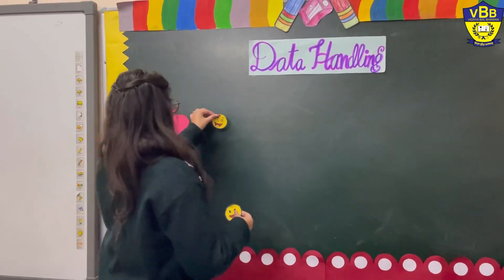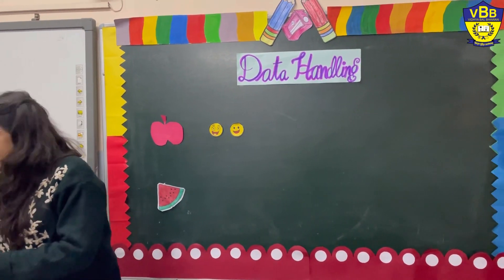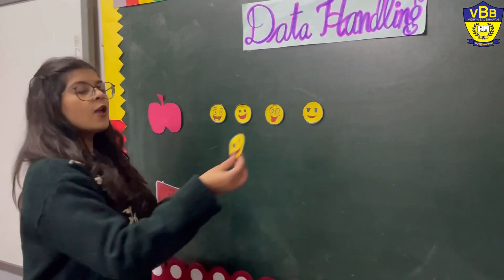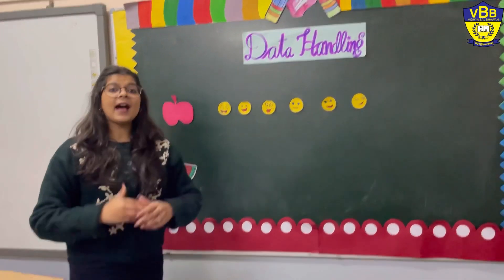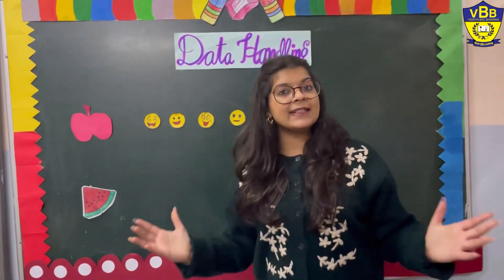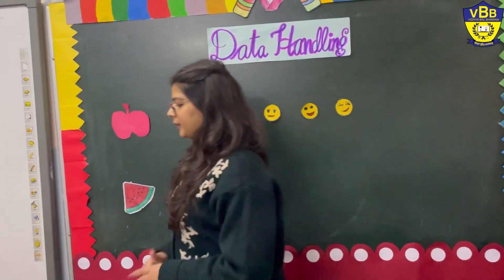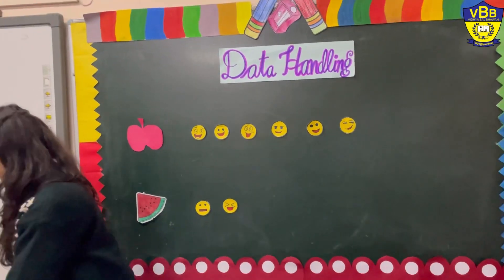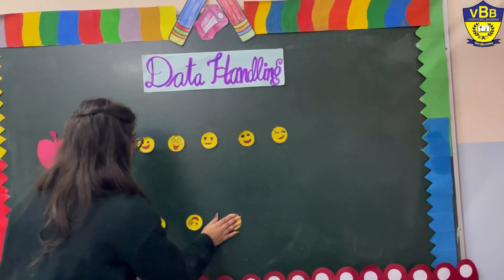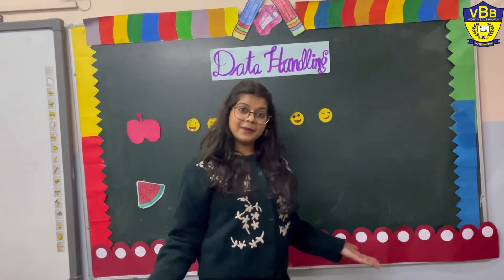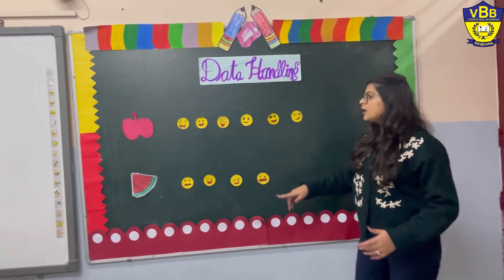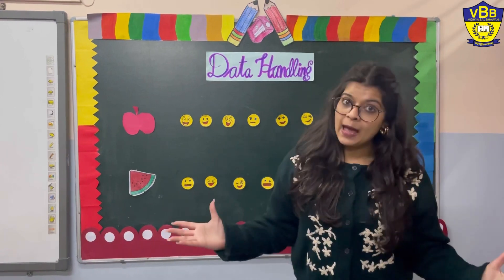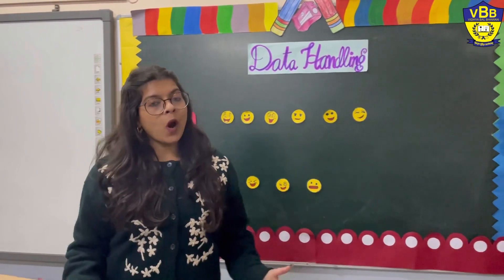Let's count. 1, 2, 3, 4, 5, and 6. In our class, 6 students like to eat an apple. Now let's look at watermelon: 1, 2, 3, and 4. So 6 students like to eat an apple and 4 students like to eat a watermelon.